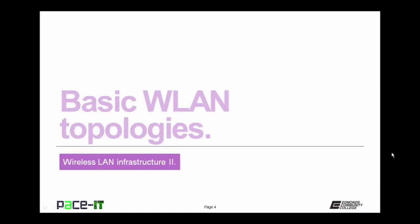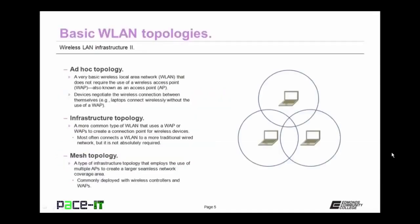I'm going to begin by talking about wireless local area network topologies. The first topology is the ad hoc topology. It's a very basic wireless local area network that does not require the use of a wireless access point, which can also be called a WAP, or an access point. The devices negotiate the wireless connection between themselves. An example of this is when laptops connect wirelessly without the use of a wireless access point.